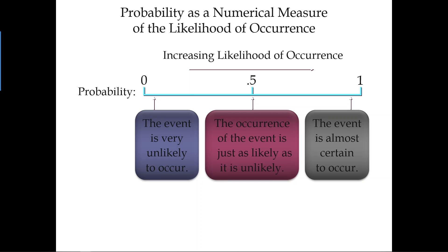This graph summarizes what I just mentioned: close to zero means very unlikely, close to one means very likely, and close to 0.5 means it is just as likely as it is unlikely — basically a half chance to happen. That's the relationship between this number called probability and the current event. Next we're going to look at the experiment.